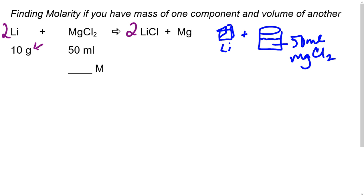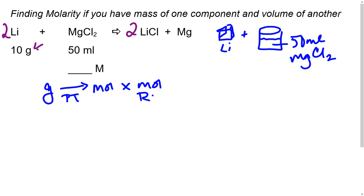The pattern for this type of problem: when you start with grams, the first thing you want to do is convert grams to moles using the periodic table mass. After converting to moles, multiply by the mole ratio from the balanced chemical equation. Once you have moles of the target species, divide by the volume that's given to obtain molarity. Let's go through this step by step.